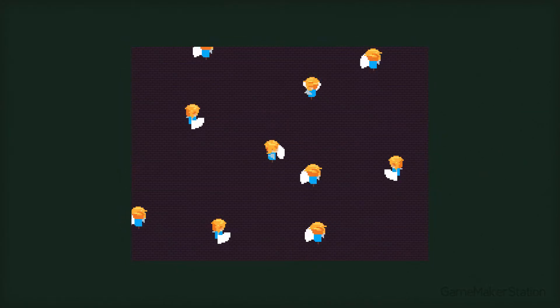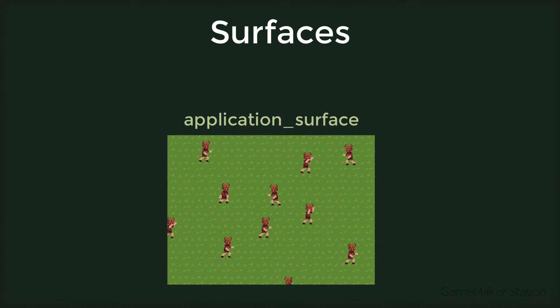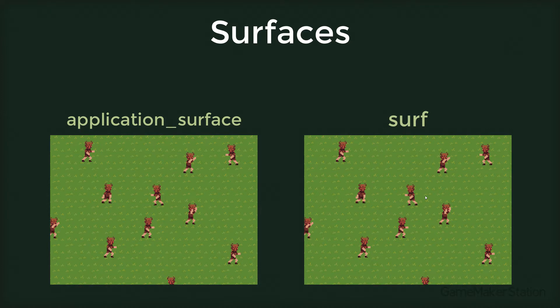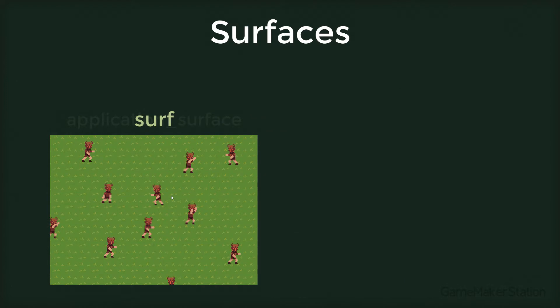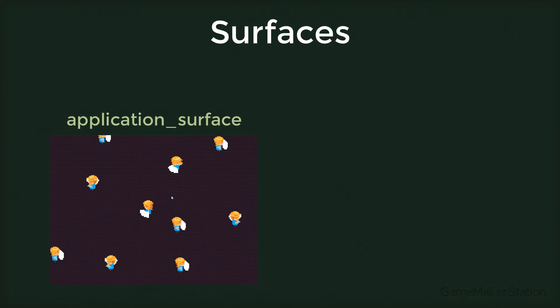Hey there, in this tutorial we'll be working on a crossfade transition. So this is what we'll have by the end of the video. We'll be using surfaces for this effect. So there's the application surface where the game is drawn, and we'll create our own surface called surf. This surface will be used for the transition. We'll create the surface when we want to start the transition, copy the application surface into surf to get a snapshot of the current room, then change the room and draw the snapshot, fading it out until it disappears. So this is basically how the crossfade will work.